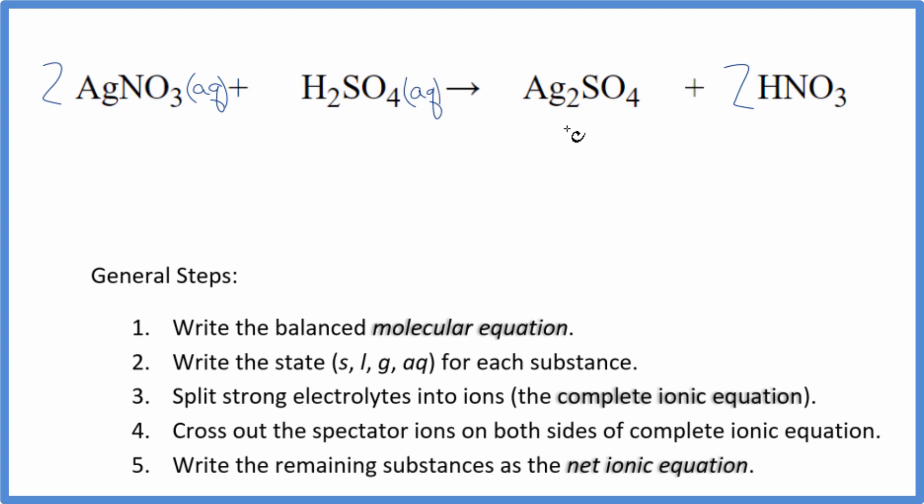For silver sulfate, sulfates are often soluble, but silver sulfate is an exception. Good one to remember. This is insoluble, so we write solid. When these substances react, this forms a solid that falls to the bottom of the test tube as a precipitate. This is a precipitation reaction. Nitric acid is a strong acid, so that'll be aqueous as well.